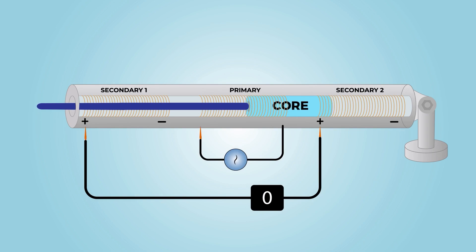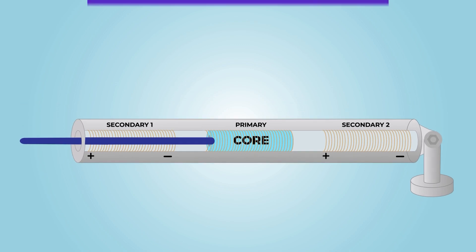The movable soft nickel-iron core is attached to the target object, and as it moves, the primary coil generates a magnetic field that induces a voltage in the secondary coils. The difference in voltage between the two secondary coils is proportional to the position of the core, and this signal can be used to determine the displacement of the target object.